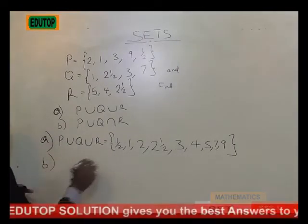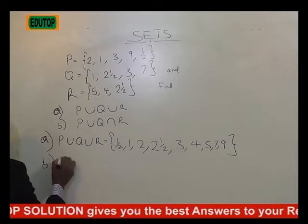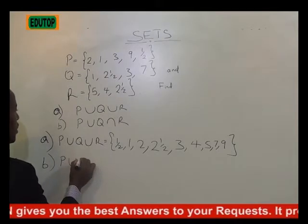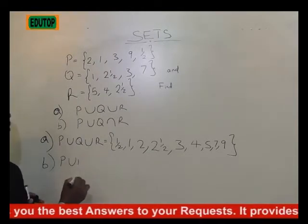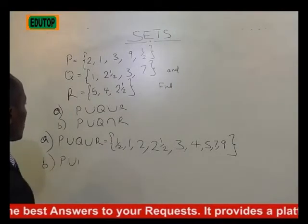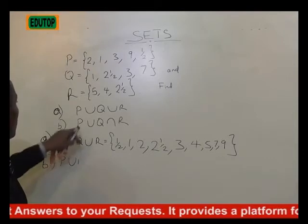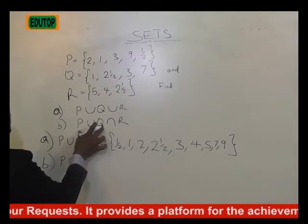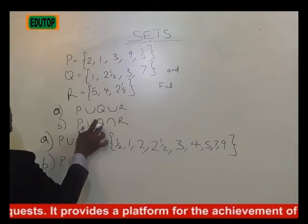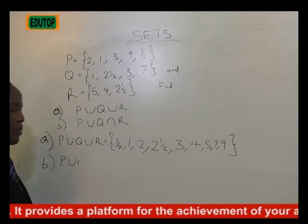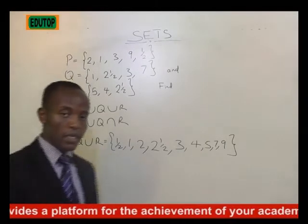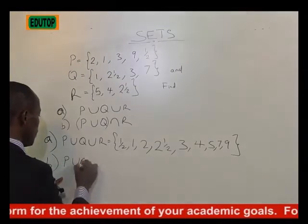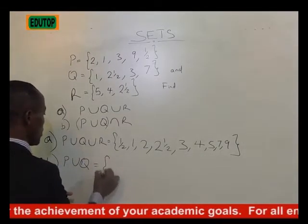For question B, we are concerned with (P∪Q)∩R. We'll first find P∪Q, then find Q∩R, and then find P∪(Q∩R). Or we can also find P∪Q first and then find the elements that belong to both P∪Q and R. First, let's find P∪Q.